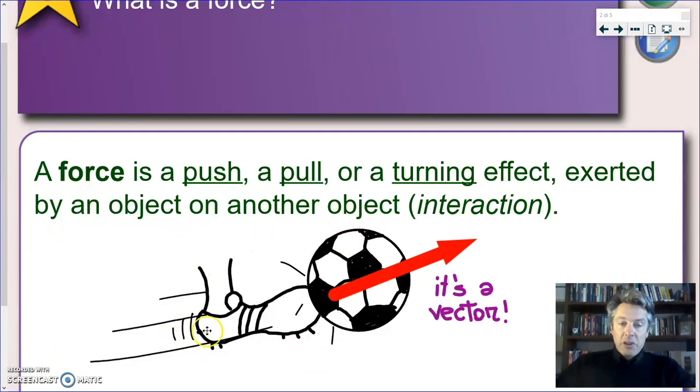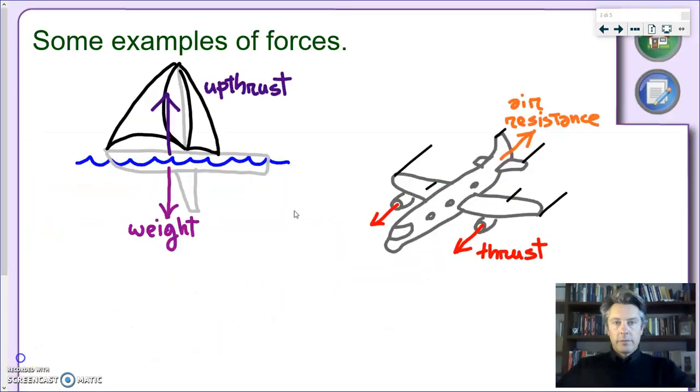And here you see the representation of a force. You have someone kicking a football. And of course a force will be defined not only by its size, what we call the magnitude, but also the direction. And we have a name for this kind of physical quantities. Yes indeed, force is a vector. So it's represented by an arrow. So every time we have an object and we have forces acting on this object, we can represent these forces using arrows.